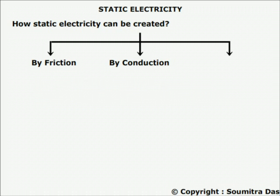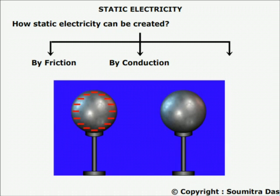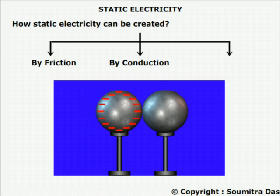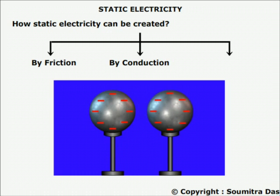No. 2: By conduction. Here the requirement is two insulated conductors — one charged and another uncharged. When the charged conductor is contacted physically with the uncharged conductor, some charge flows to the uncharged conductor and remains there even after separation of the two.